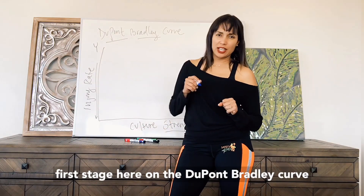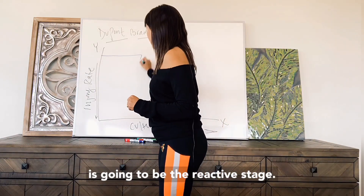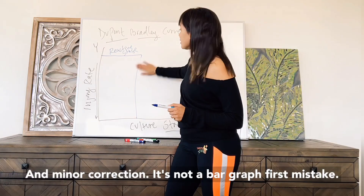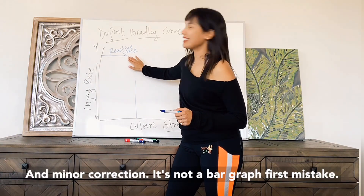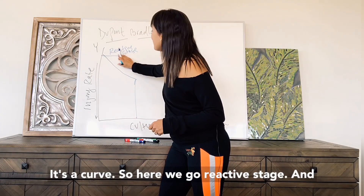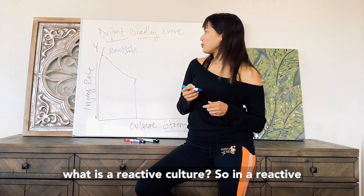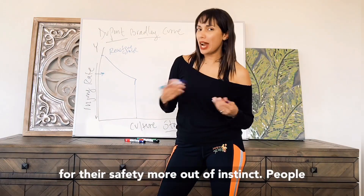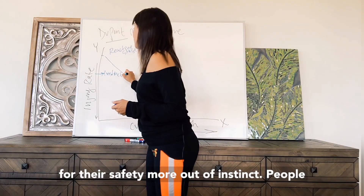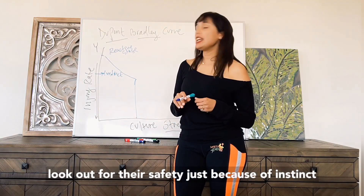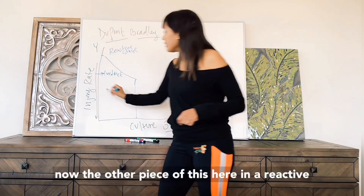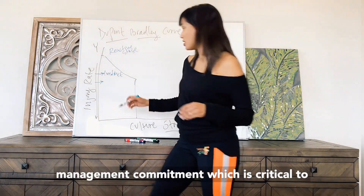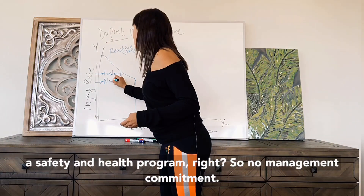The first stage on the DuPont Bradley Curve is the reactive stage. In a reactive culture, people are looking out for their safety more out of instinct — people don't want to get hurt by nature, so they look out for their safety just because of instinct. The other piece of a reactive culture is that there really isn't management commitment, which is critical to a safety and health program.